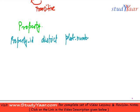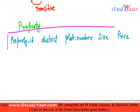I have a property schema in which I have attributes like property ID. I have the district where this property is located. I have a plot number, the plot number within the district. And I have the size - what is the size of this property? And I have the price - what is the price of this property? This is my relation.